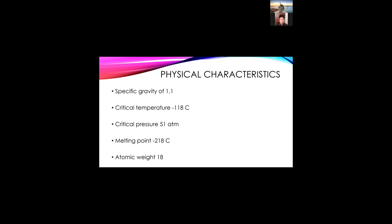The physical characteristics of oxygen: specific gravity of 1.1, critical temperature minus 118 degrees Celsius, critical pressure 51 ATM, melting point minus 218 degrees Celsius, and atomic weight of 80.